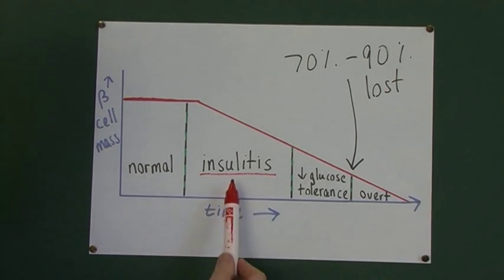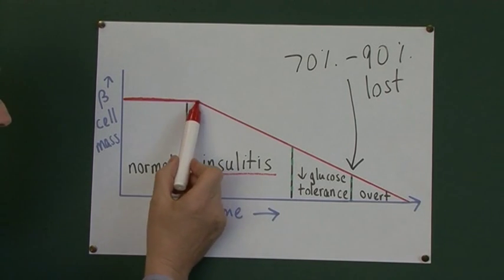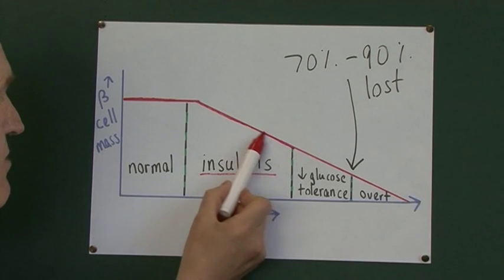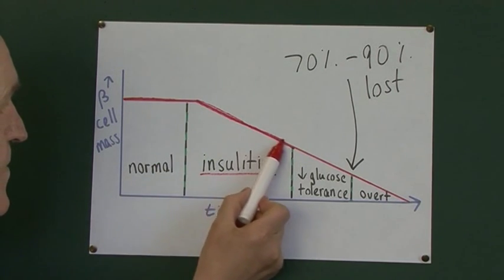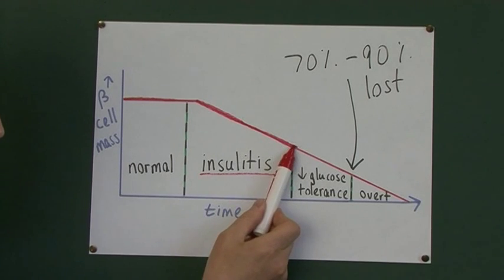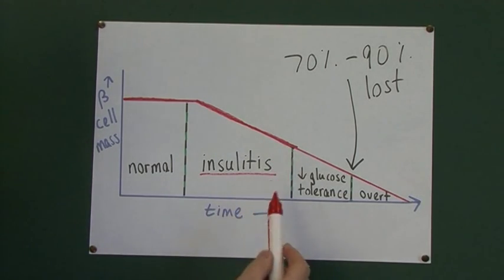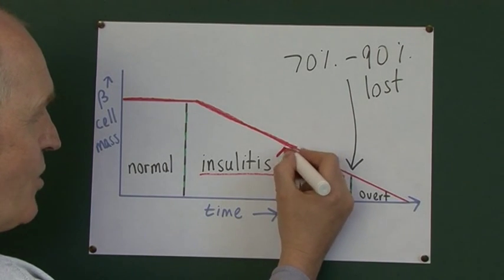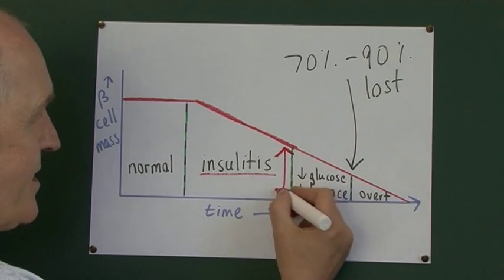And as this process goes on, more and more beta cells are killed. Therefore, the total number, or the total mass of beta cells, gradually goes down. So, during this time, the patient will be perfectly normal, because they've still got quite a few beta cells left. In fact, more than enough to control their blood sugar levels.